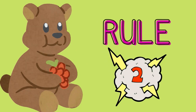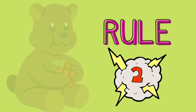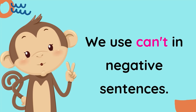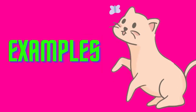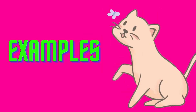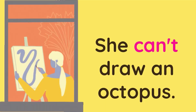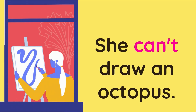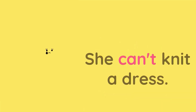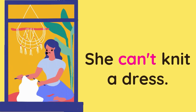Rule number two: we use can't in negative sentences. Let us look at a few examples. Number one: I can't play the violin. The second example: she can't draw an octopus. And the third example: she can't knit a dress.